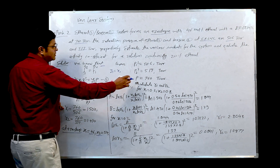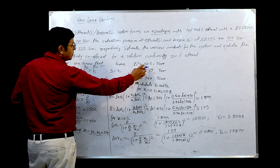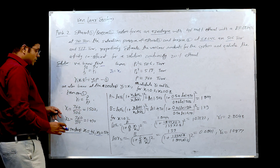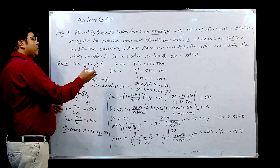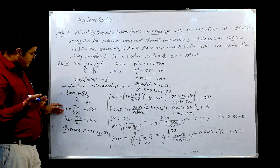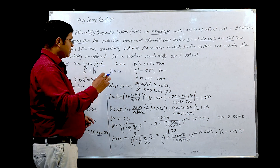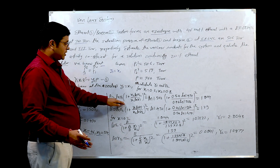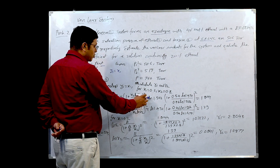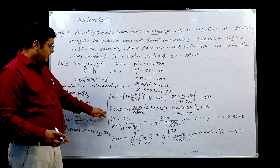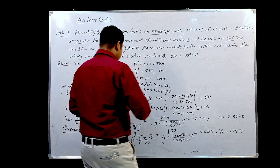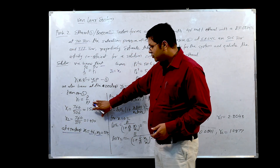From γᵢ = P/Pᵢˢ, we calculate γ₁ = 760/506 = 1.502, and similarly γ₂ = 760/517. At the azeotrope with known saturation pressures, we can calculate γ₁ and γ₂. Once we have those values, the rearranged equations for the Van Laar constants look like: A = ln γ₁ · (1 + (x₂·ln γ₂)/(x₁·ln γ₁))², and similarly B = ln γ₂ · (1 + (x₁·ln γ₁)/(x₂·ln γ₂))².